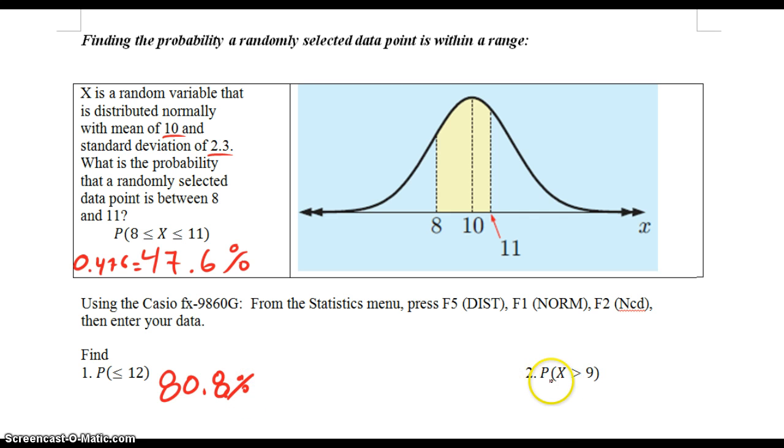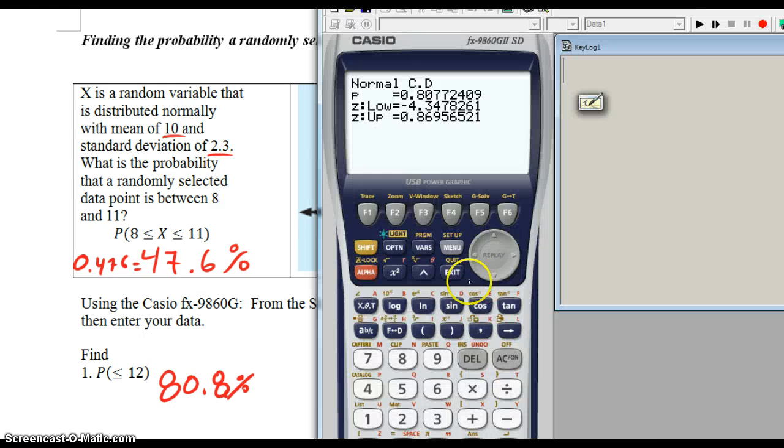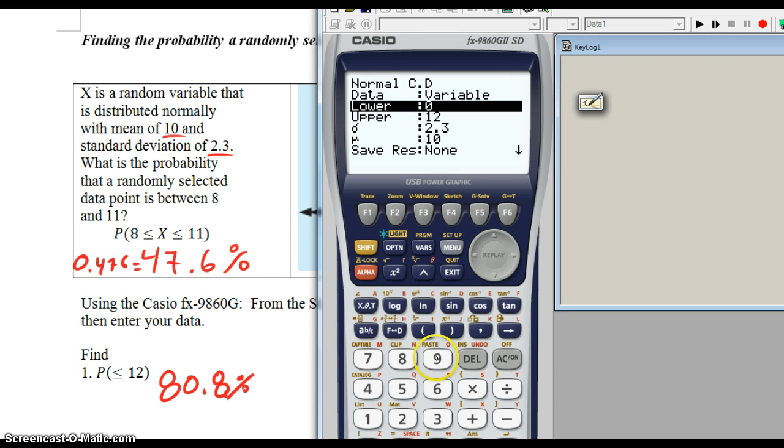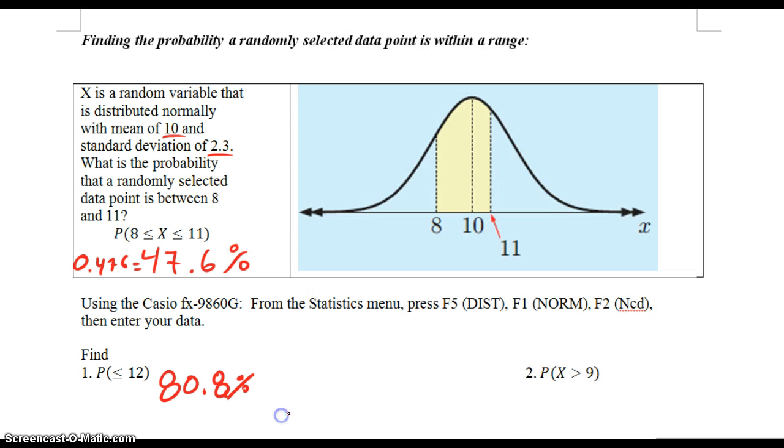And then greater than 9, same idea, but just like here the lower one was 0, here the upper one is going to be something really big. The original thing was greater than 9, so the lower is 9. The upper is going to be something really big—we're going to do 1 times 10 to the 99th power, a huge number. Then p is going to be 66.81, so 66.8 percent.